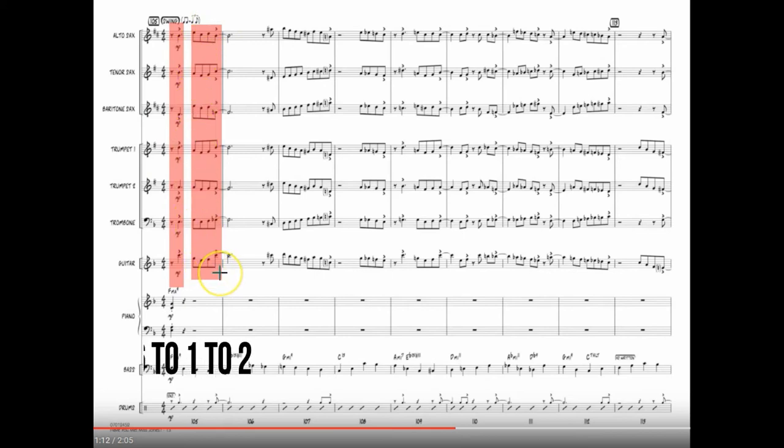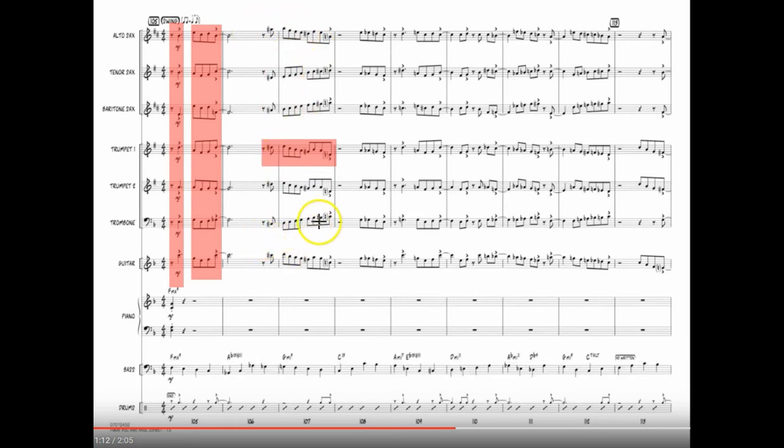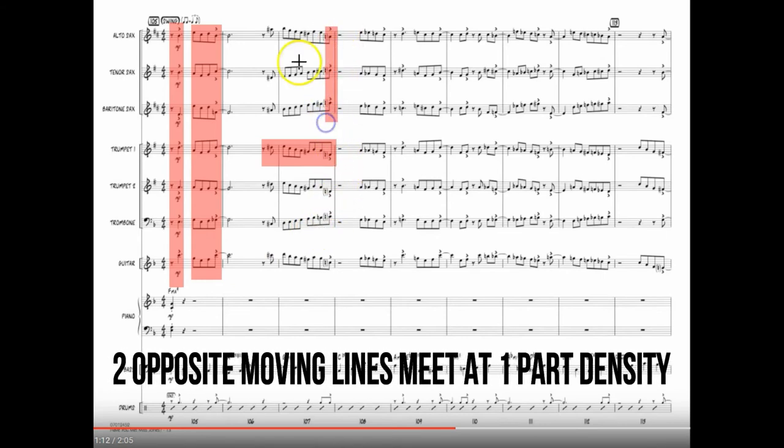So this would be six parts here, and then we go down to one here, one part density. The span covers about an octave or so, maybe a little more at times. Right here he breaks into two separate lines. Here's a line that is included in the trumpets and the alto. Notice how we have an ascending line that meets at the very end here on a unison. So we go from two-part density to one part at the very end there.